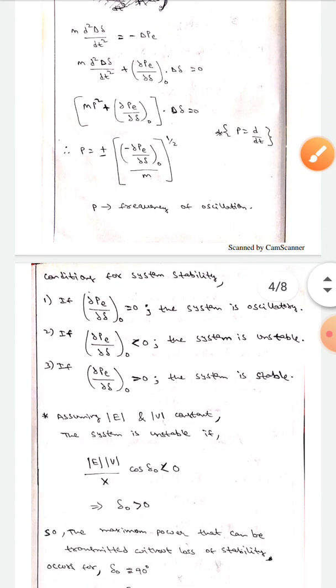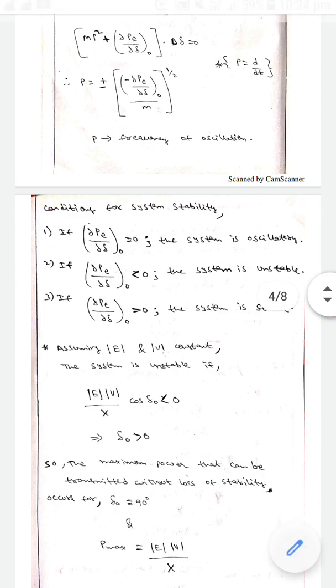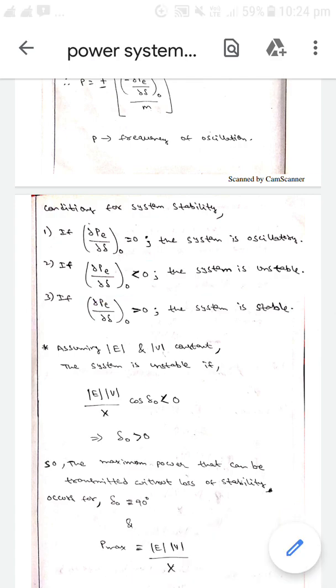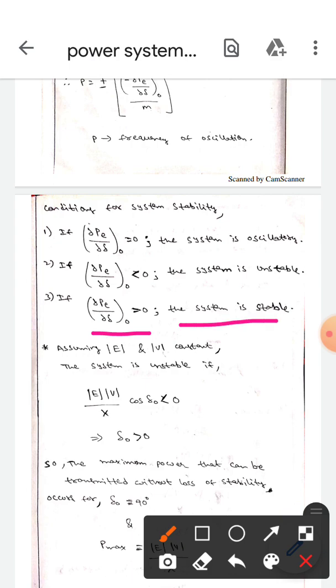The condition for system stability is: if ∂Pe/∂δ equals zero, the system is oscillatory. If it is less than zero, the system is unstable. If it is greater than zero, the system is stable.